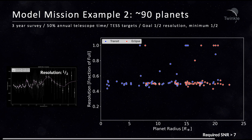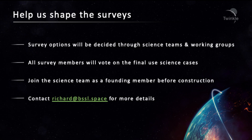These preliminary studies have shown that, in a three-year survey, Twinkle could characterise a diverse array of exoplanet targets. As you can see, the Twinkle team are putting together various scenarios of what the exoplanet survey could look like, but ultimately the scientific options will be decided by the scientists who join as survey members. Founding members who join the programme before January 2021 will be invited to join the exoplanet science team and help us shape the mission.